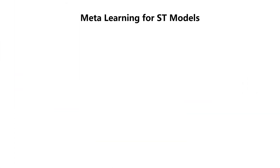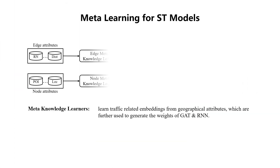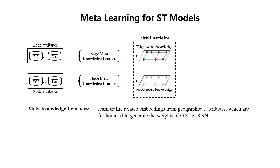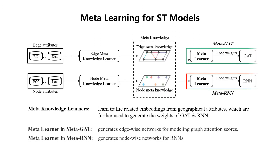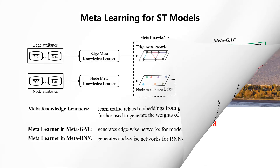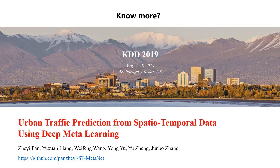Now we show how to use the meta-learning technique in ST models. First, meta-knowledge learners are used to embed geographic attributes into meta-knowledge. After that, such meta-knowledge is used as input to a meta-learner to generate edge-wise weights in graph attention and node-wise weights in RNN, respectively. With the help of meta-learning, our model can capture the relationship between ST correlations and geographical attributes. For more information, please refer to our paper and code. Thanks for watching.